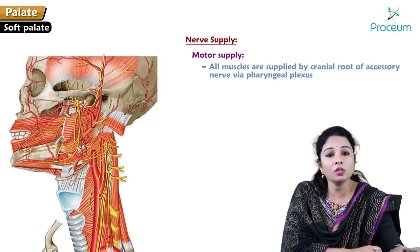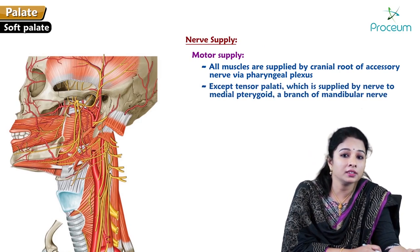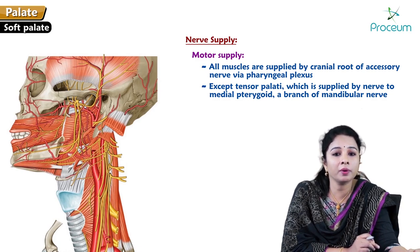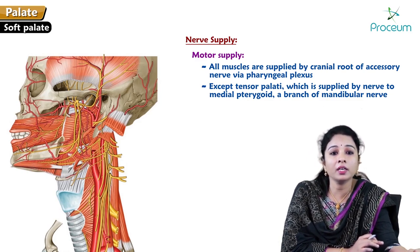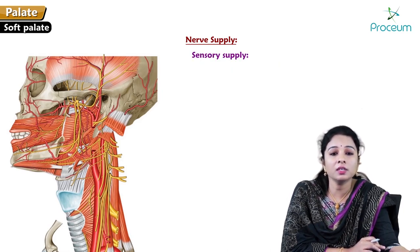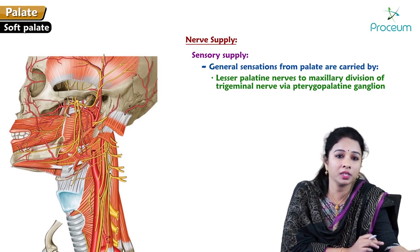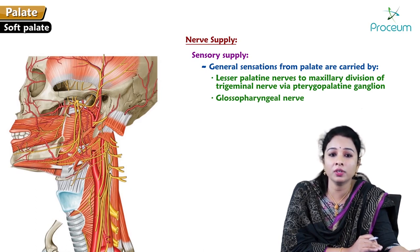Regarding nerve supply — motor supply: all muscles of the soft palate are supplied by the cranial root of the accessory nerve via the pharyngeal plexus, except the tensor palatini, which is supplied by the nerve to the medial pterygoid, a branch of the mandibular nerve. For sensory supply: general sensations are carried by the lesser palatine nerves of the maxillary division of the trigeminal nerve via the pterygopalatine ganglion, and also by the glossopharyngeal nerve (ninth cranial nerve).